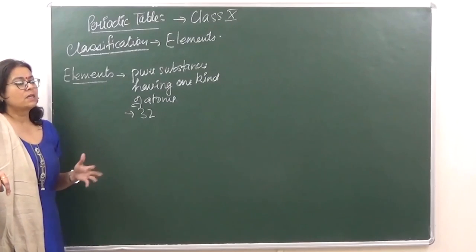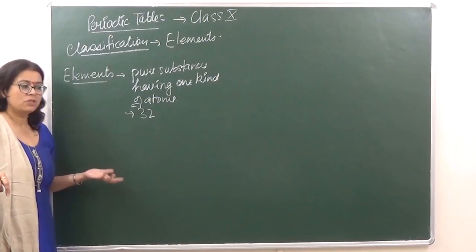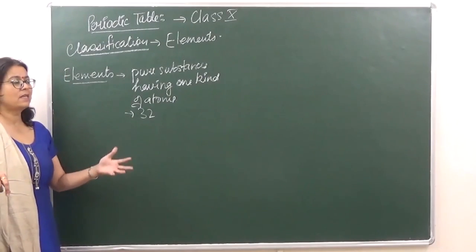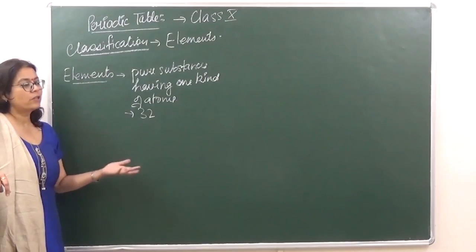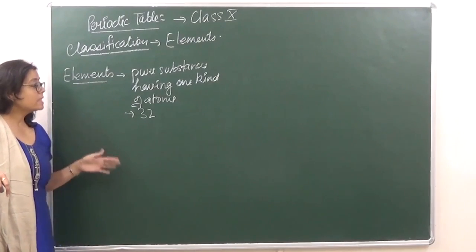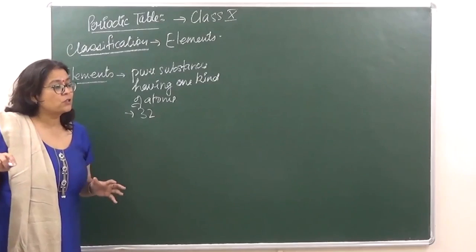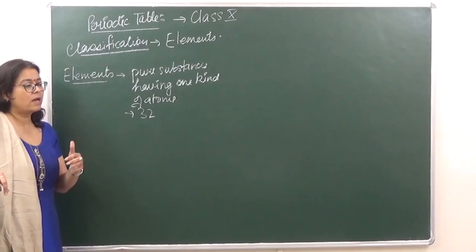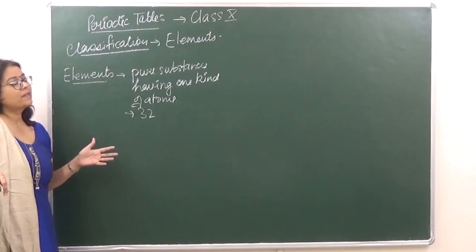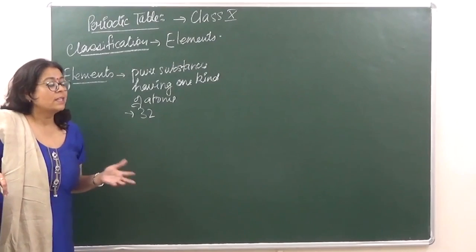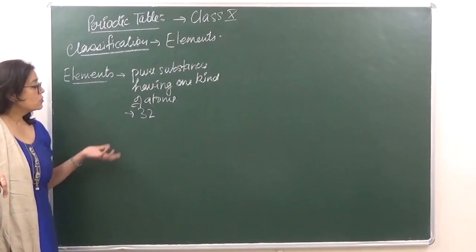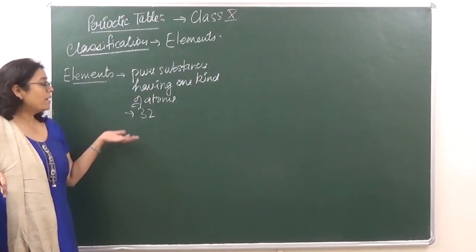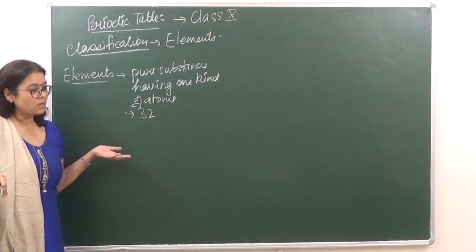Like if you are sitting in a class of 10 students, it is very easy for the teacher to memorize everybody's characteristics — that child has long hair or she is fair, and so on. But as the number keeps growing and we have a class of 100 students, teachers know their students only by roll numbers; they don't even know their names. The same thing was happening here — as more and more elements were discovered, it became very difficult to keep track of all their properties.